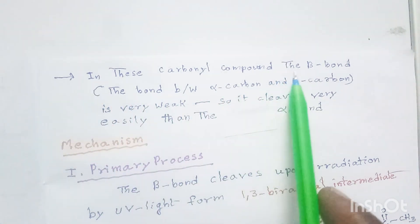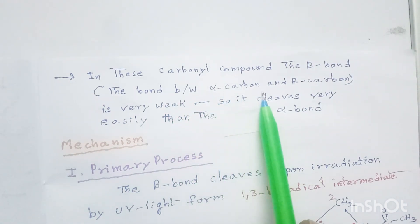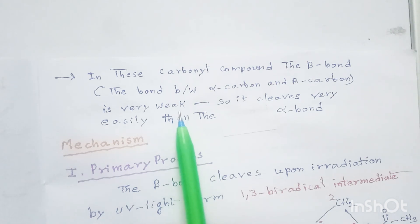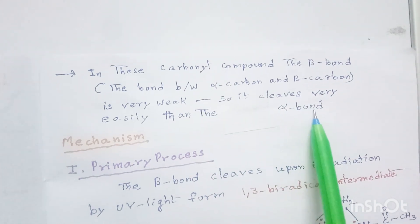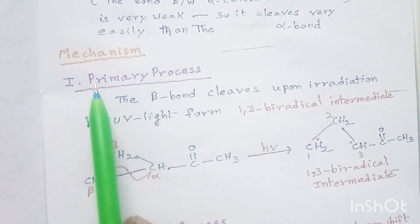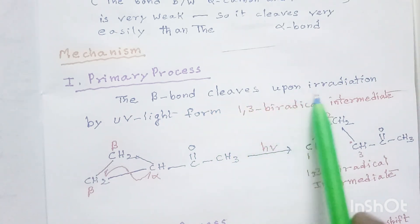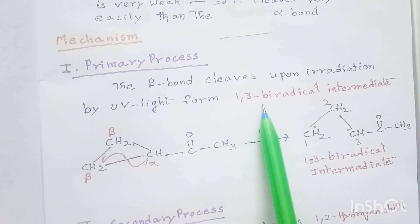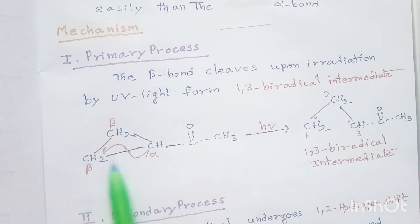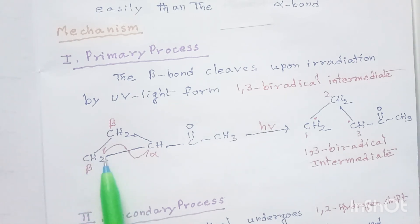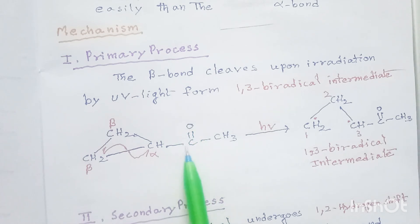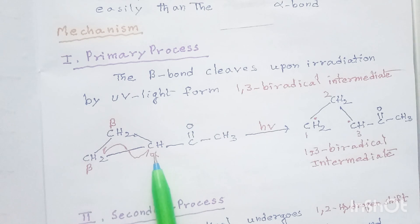In these carbonyl compounds, the beta bond — that is the bond between alpha carbon and beta carbon — is very weak, so it leaves very easily compared to the alpha bond. In the primary process, the beta bond cleaves upon irradiation by UV light, forming a 1,3 biradical intermediate. This is the cyclopropane carbonyl compound, acetyl cyclopropane: CH2-CH2-CH2-CH, C=O, CH3.